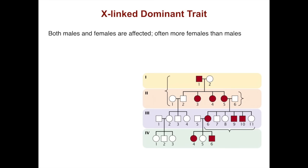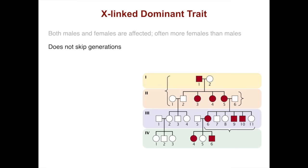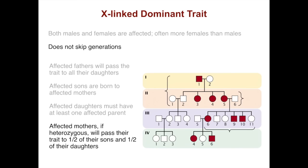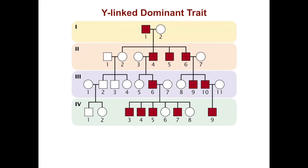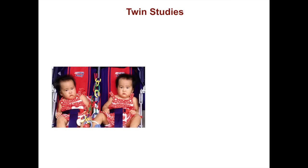For X-linked dominant traits, both males and females are affected, often more females than males. This does not skip generations. Affected fathers will pass the trait to all of their daughters, and affected daughters must have at least one affected parent. Affected mothers, if heterozygous, will pass the trait to half of their sons and half of their daughters. Dominant mutations are also seen on the Y chromosome — in that case only males are affected, the trait is passed from father to all sons, and it does not skip generations.